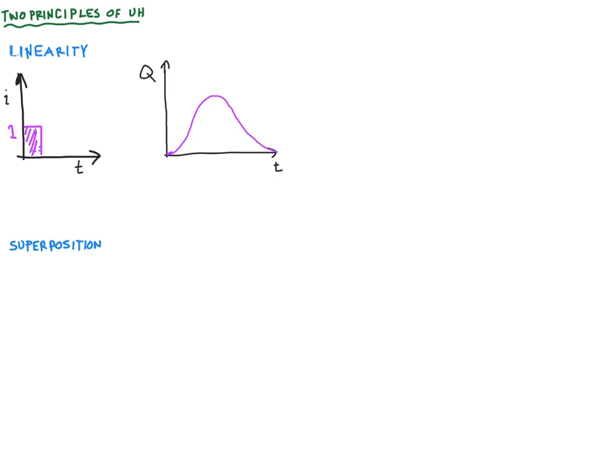So what happens if instead of one inch of rain, we have two inches of rain in that same duration? Well, the principle of linearity allows us to just double the amount of flow for each point in the hydrograph. So this would be two times QP here, where QP is the max flow rate for the unit hydrograph when you had just one inch of rain. If you have three inches of rain in that same duration, now it's really important that the duration remains the same here, then you can triple it and so on.